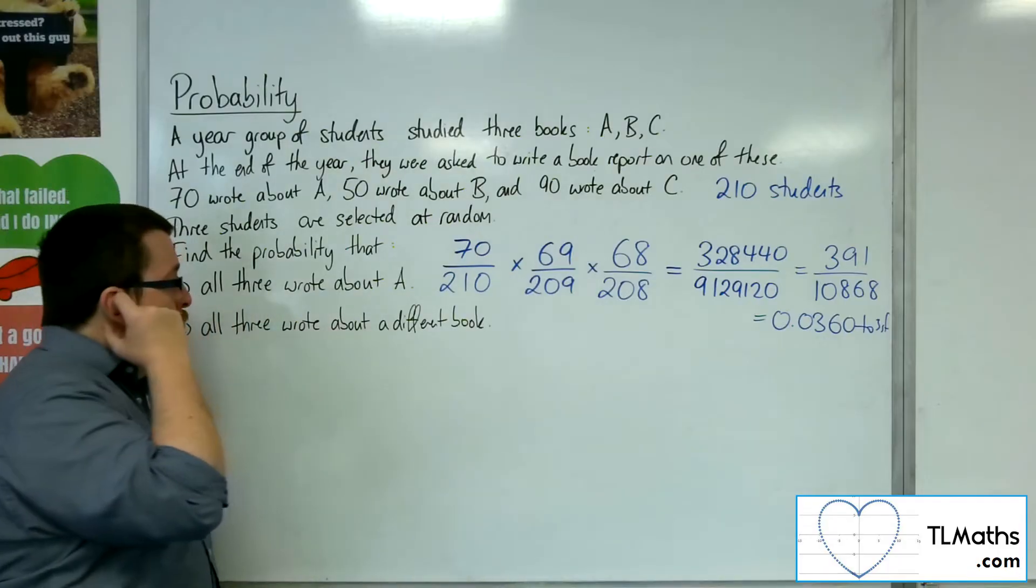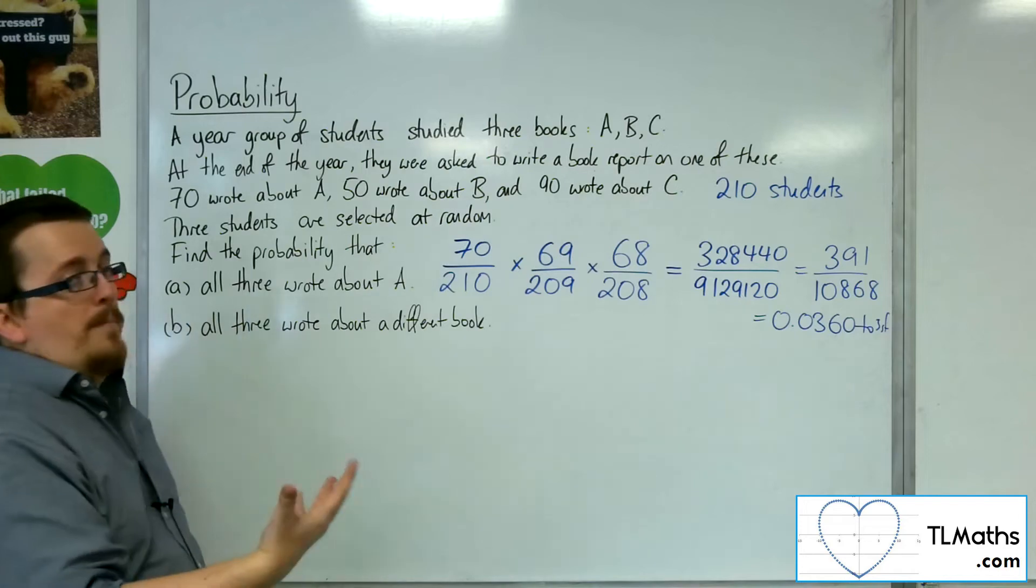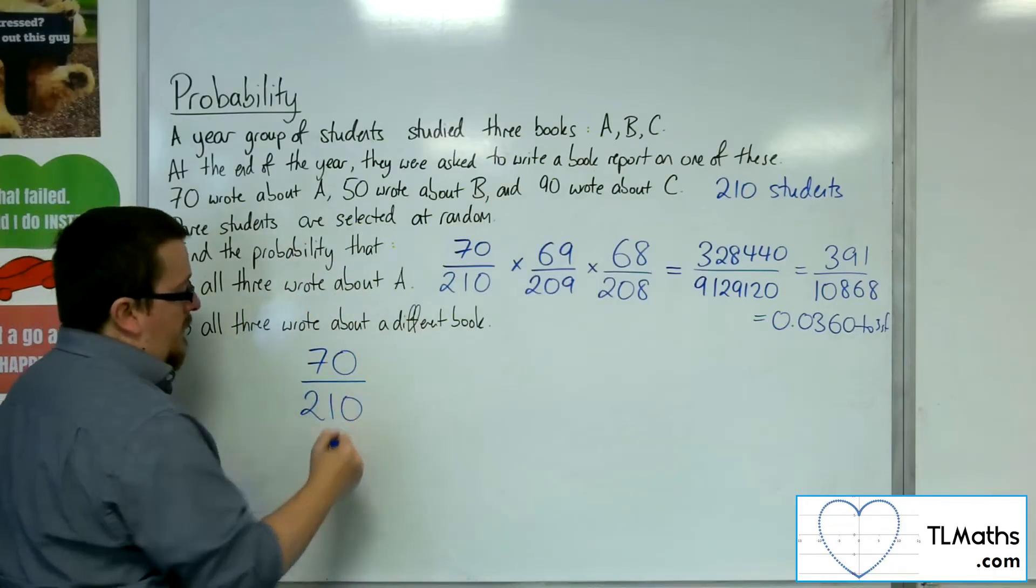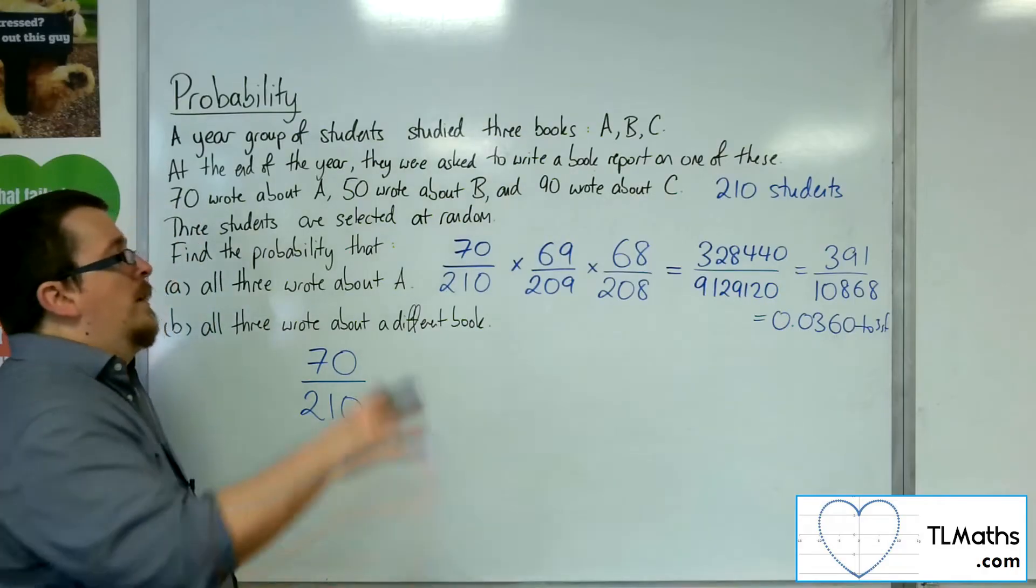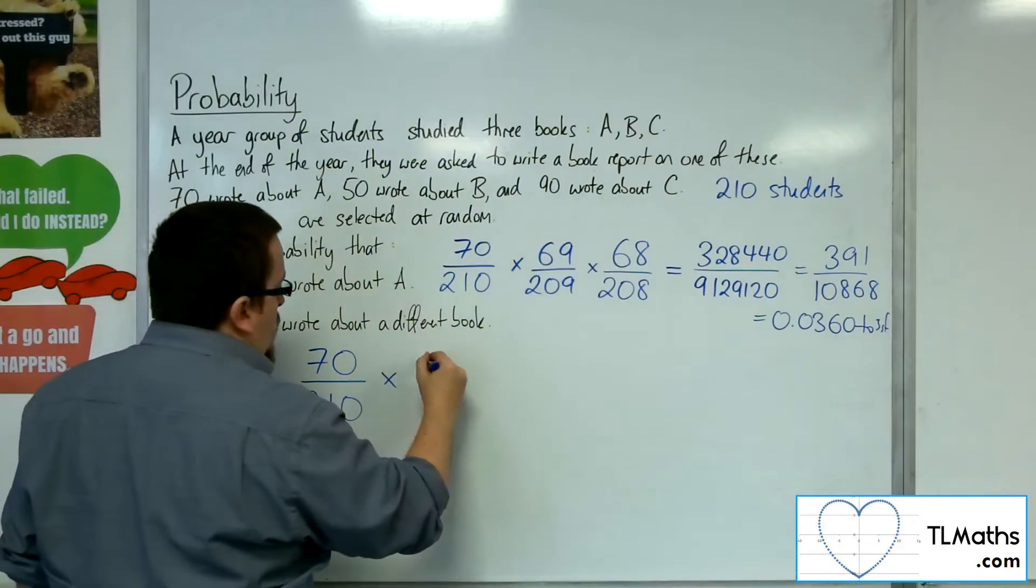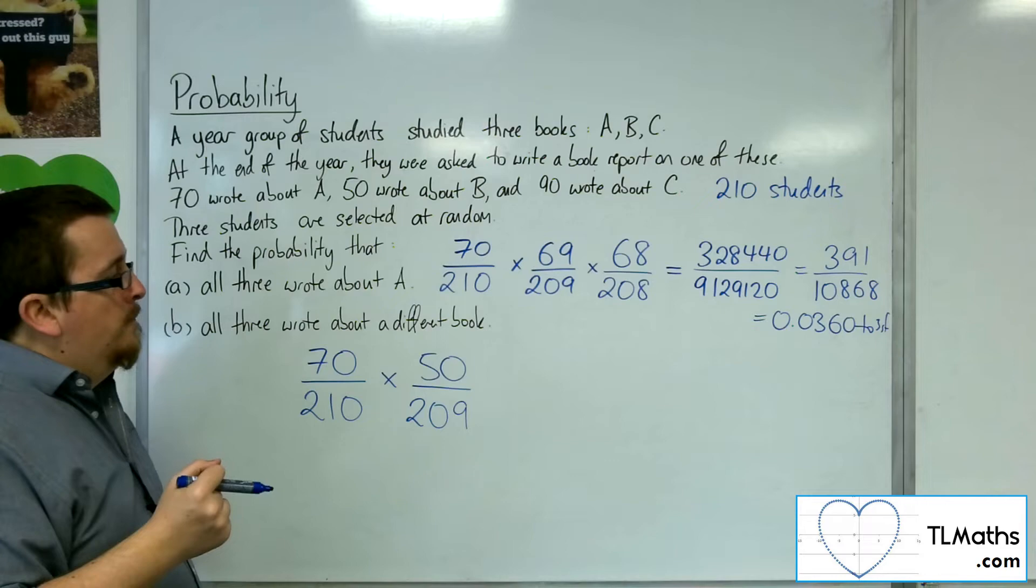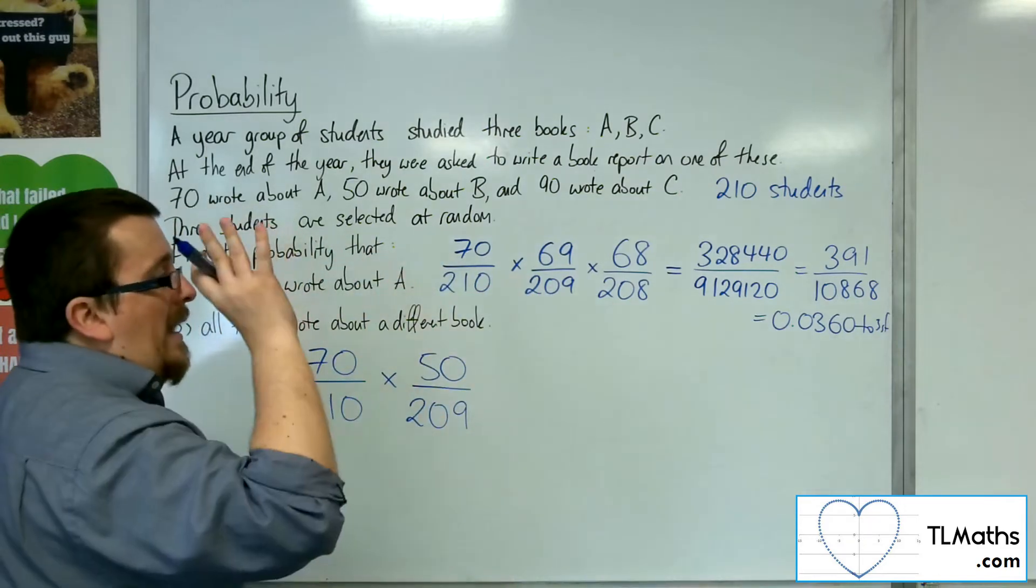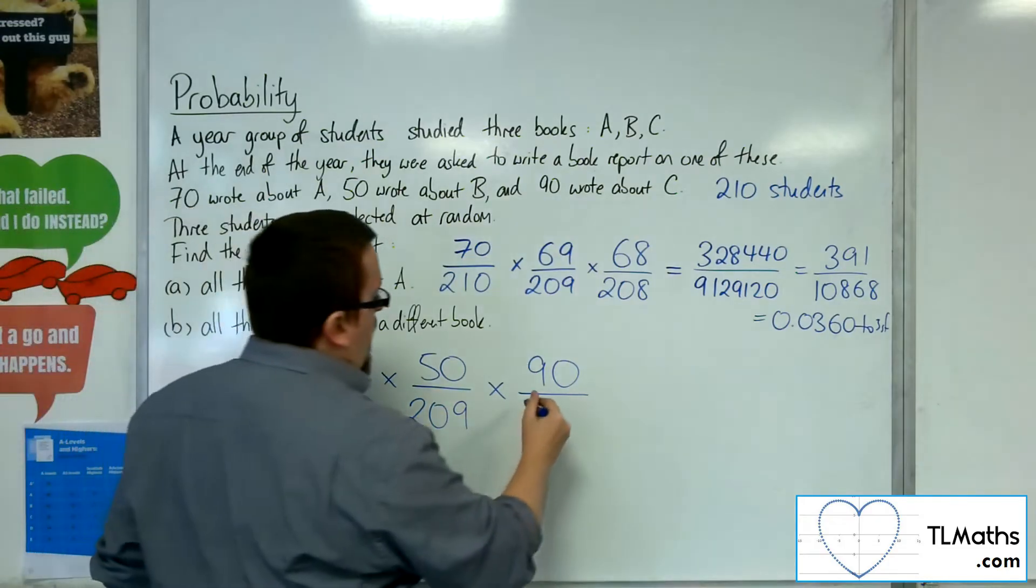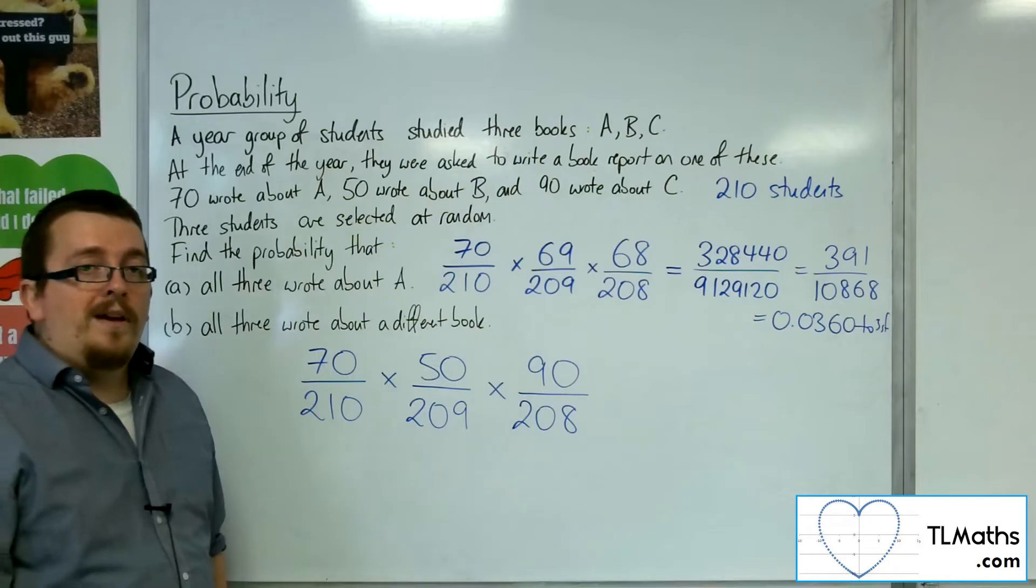Now, if all three wrote about a different book, then I pick out the first student who's written about book A. The probability is 70 out of 210. They walk over to the side. I pick out another student who wrote about book B. The probability is 50 out of the remaining 209 students. They walk over to the side, and I pick out another student who wrote about book C. There were 90 students that wrote about book C out of the remaining 208 students. Now, this as it stands isn't the full answer.